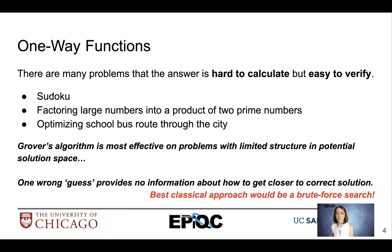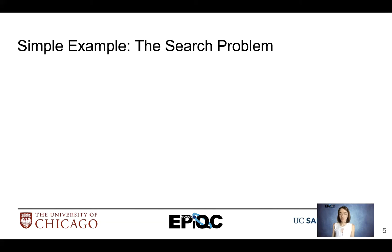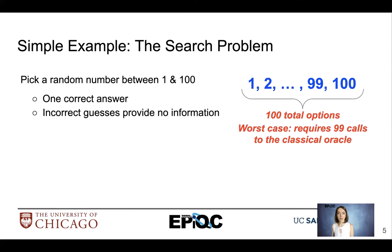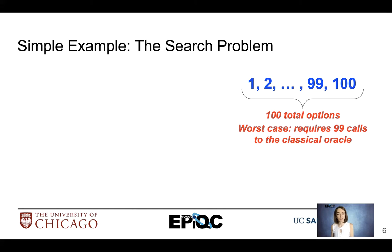If we were thinking about the best way to solve these types of problems with a classical algorithm, we would have to implement a brute force search or an exhaustive search. Let's think of a simple example: we'll pick a random number between 1 and 100, and there's only one correct answer. An incorrect guess doesn't provide any information about what the correct answer is. In the worst case we would have 99 calls to our classical oracle to find the solution. This is an example of an unstructured search — we don't get any information from previous guesses about what the correct solution is.